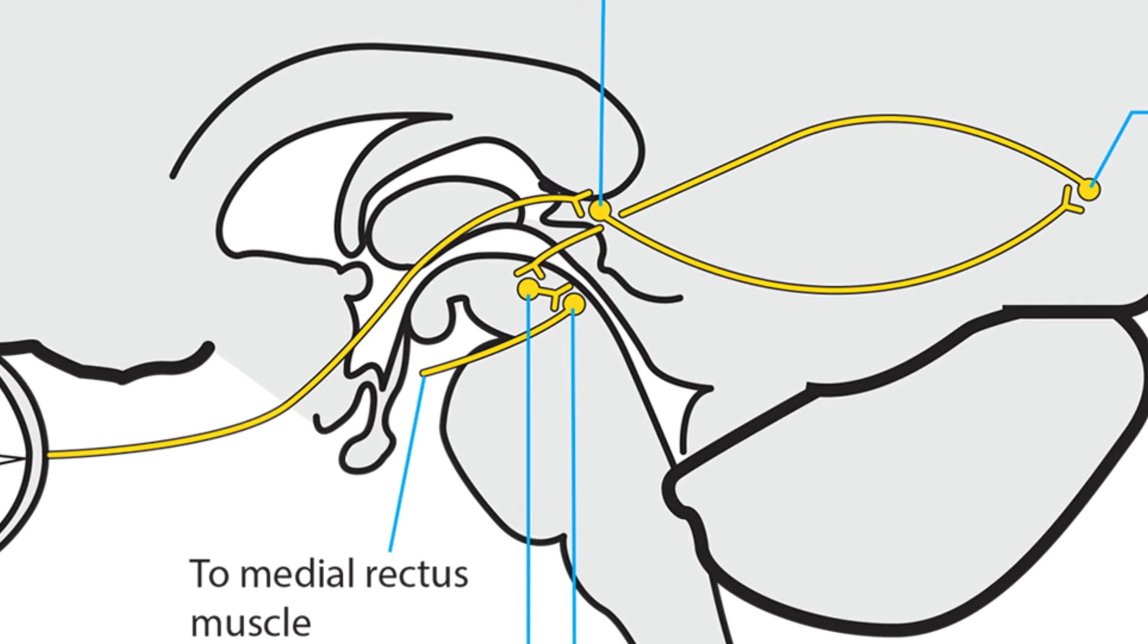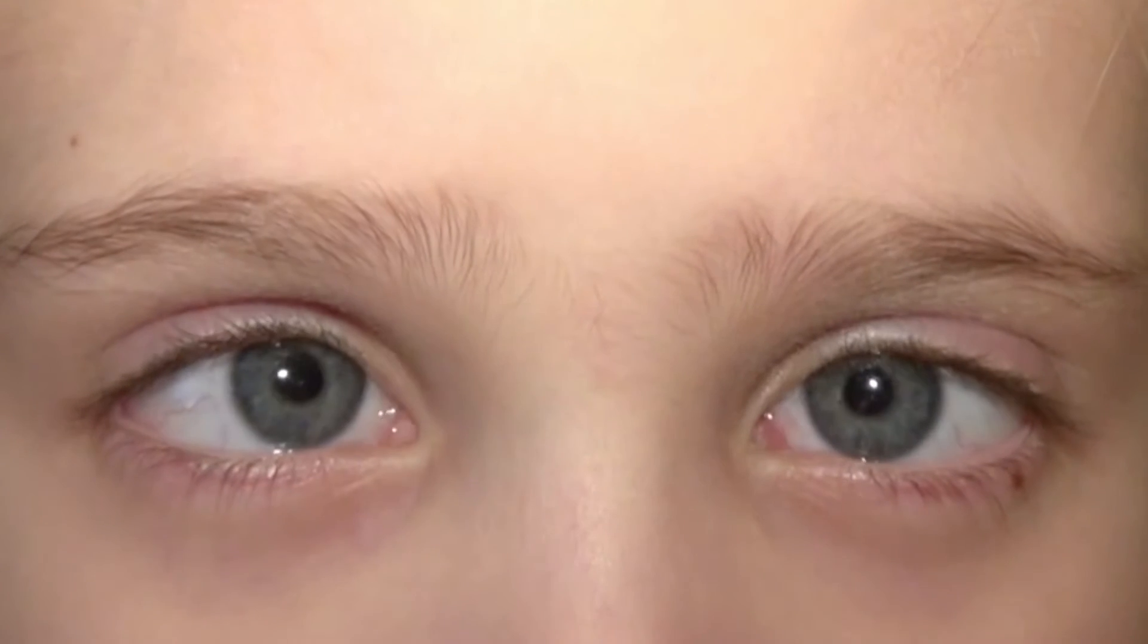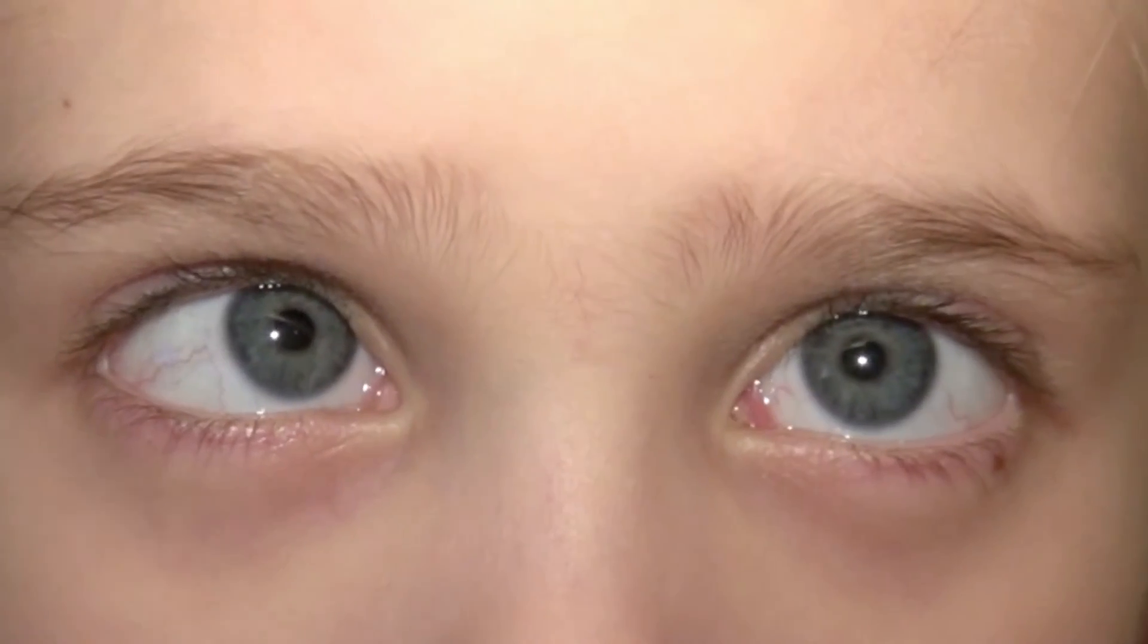Damage to the tegmental midbrain is the third way to upset the balance between convergence and divergence and to cause comitant esotropia or exotropia. Eye movements will, as usual, have normal amplitude, and here is an example of that in a child with esotropia.